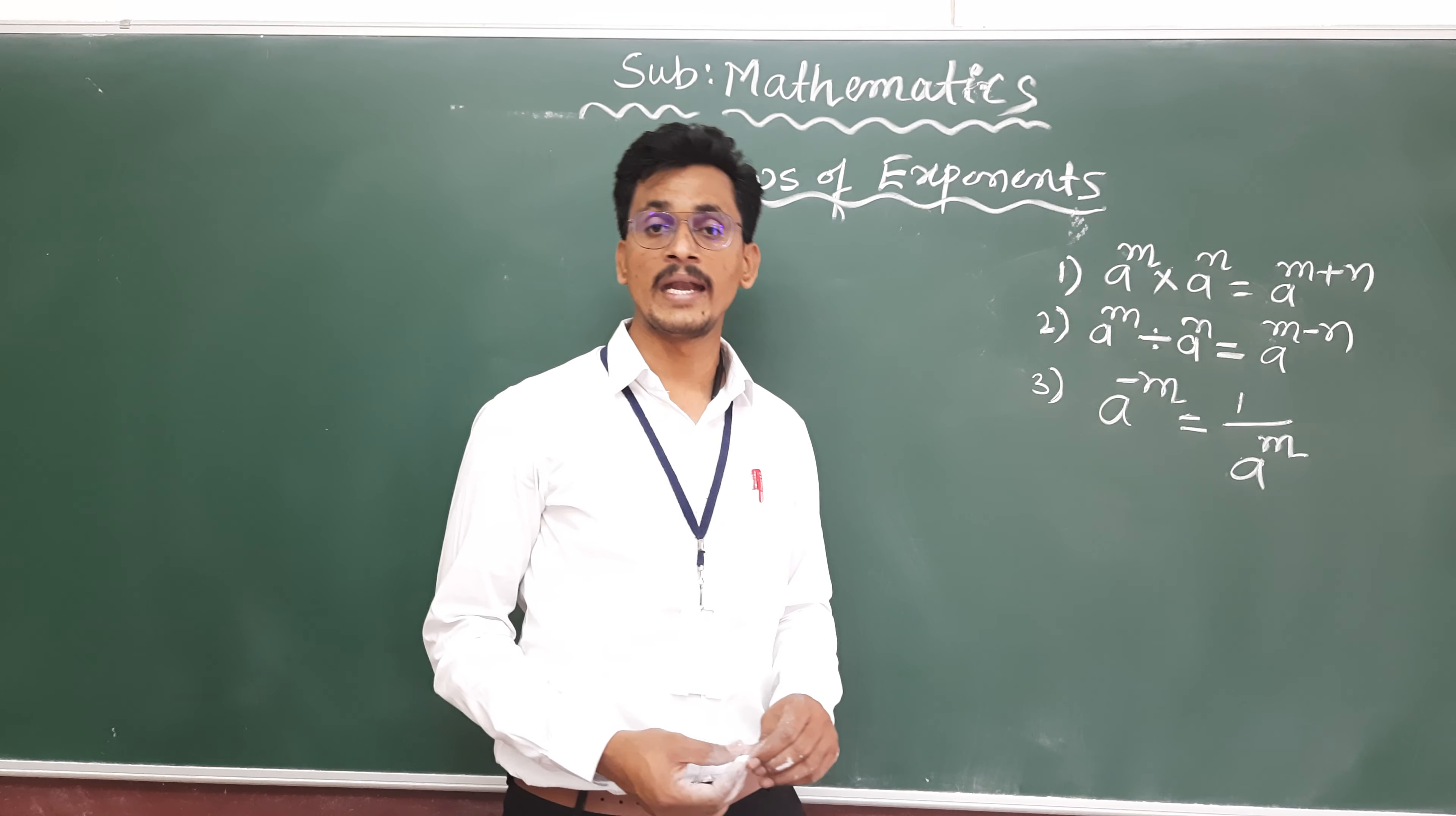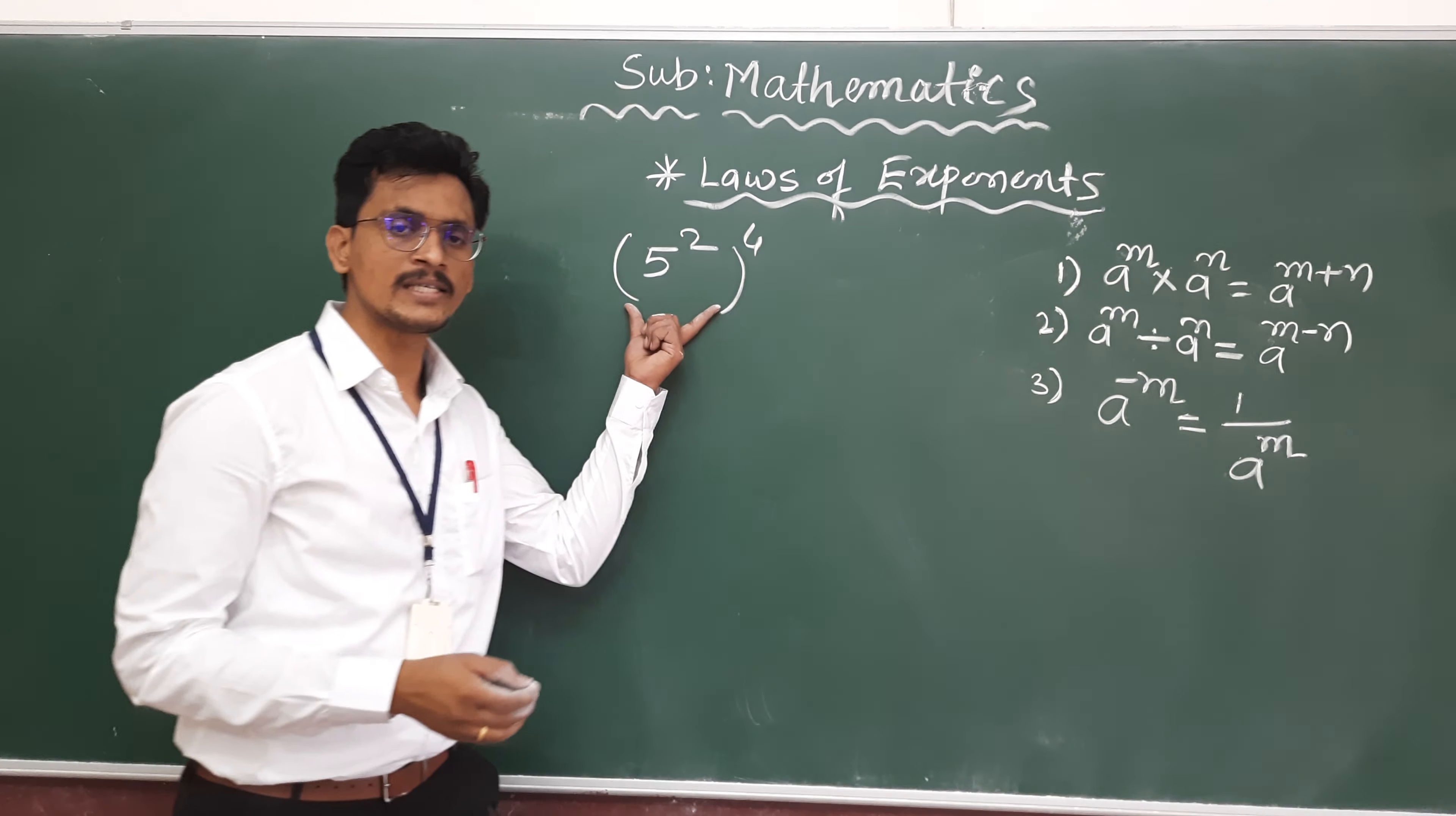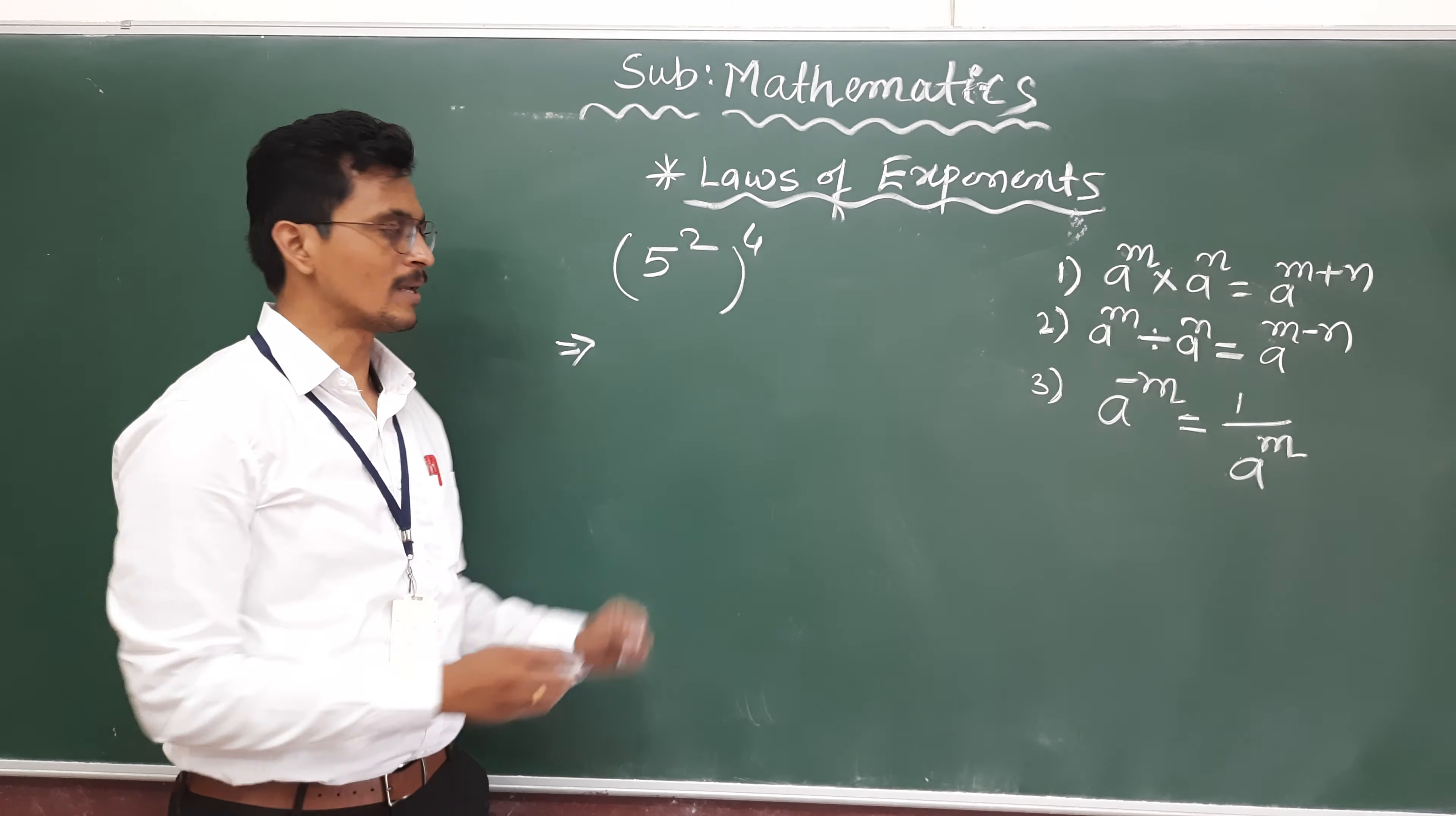Now, we will check the next law. That is, suppose 5 square raised to power 4 is there. What is the meaning exactly? If power is 4, it means that whatever is there in bracket, we have to write 4 times with multiplication.